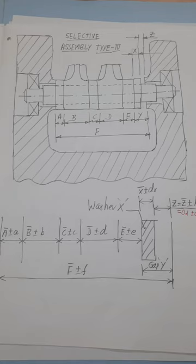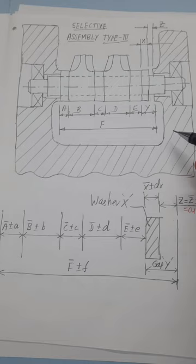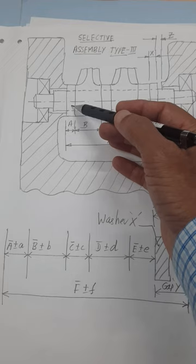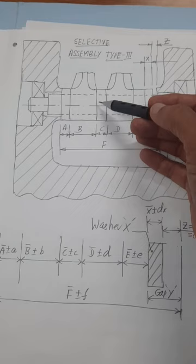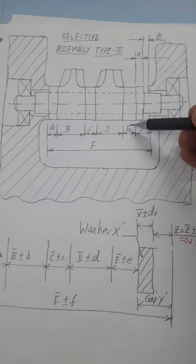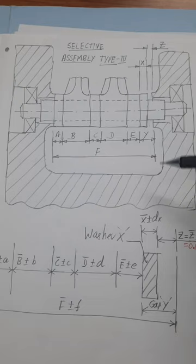Dear students, we will discuss the third type of selective assembly in this session. I have shown an example to explain the third type of selective assembly. This mechanical assembly contains many parts: a spacer with dimension A, a lever with dimension B, another spacer with dimension C, another lever with dimension D, another spacer with dimension E, and a washer X. All these parts are mounted over the shaft, and this is the body of the mechanical assembly.